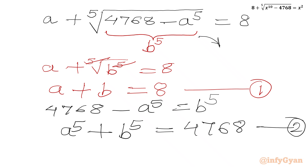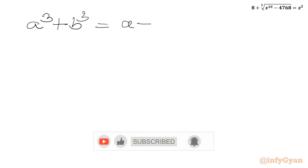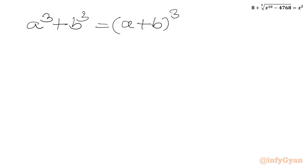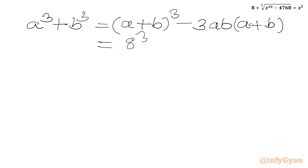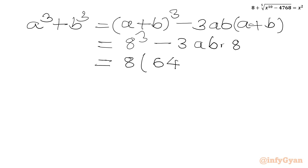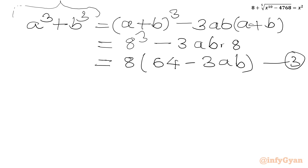Now I will use an algebraic formula. The formula for a cubed plus b cubed is: a plus b whole cube minus 3ab times a plus b. Since a plus b equals 8, I can write: 8 cubed minus 3ab times 8. Factoring out 8, we get: 8 times 64 minus 3ab. This is our equation 3, giving us the value of a cubed plus b cubed.